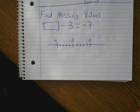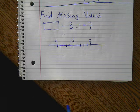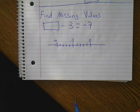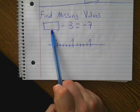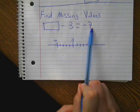So for this lesson, we're going to be finding missing values on the number line. If you're given an equation like we have in front of us, we have something minus 3 equals negative 7.